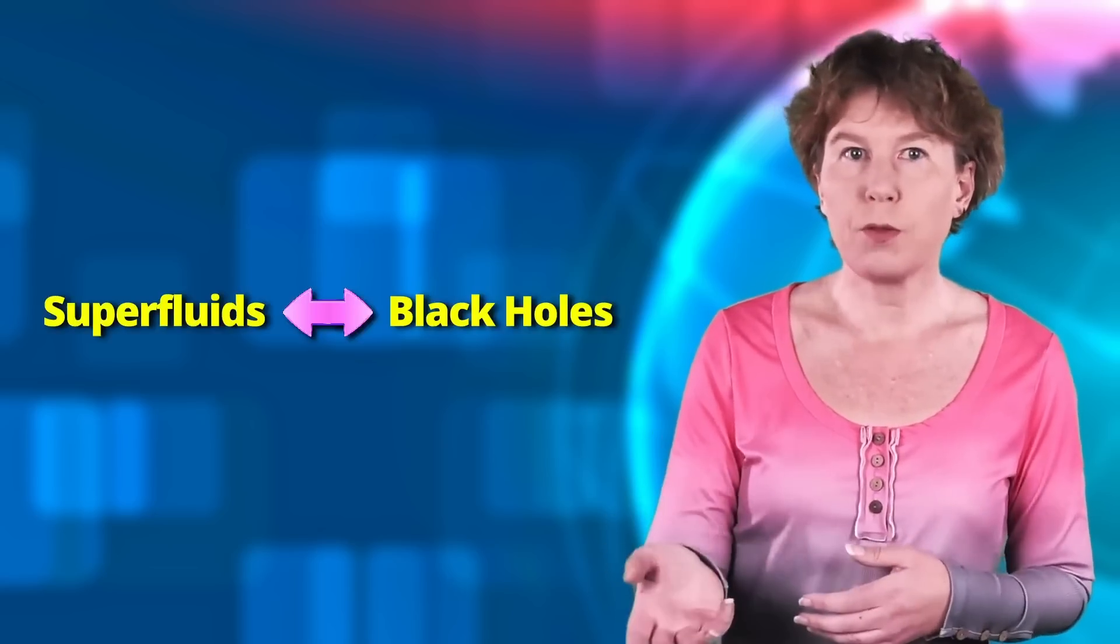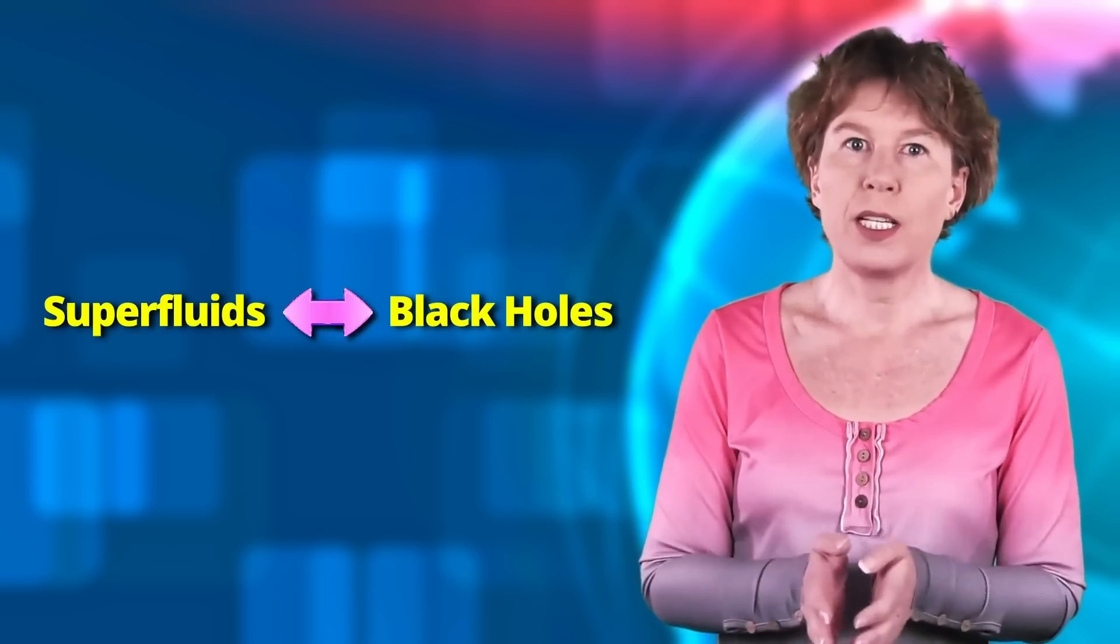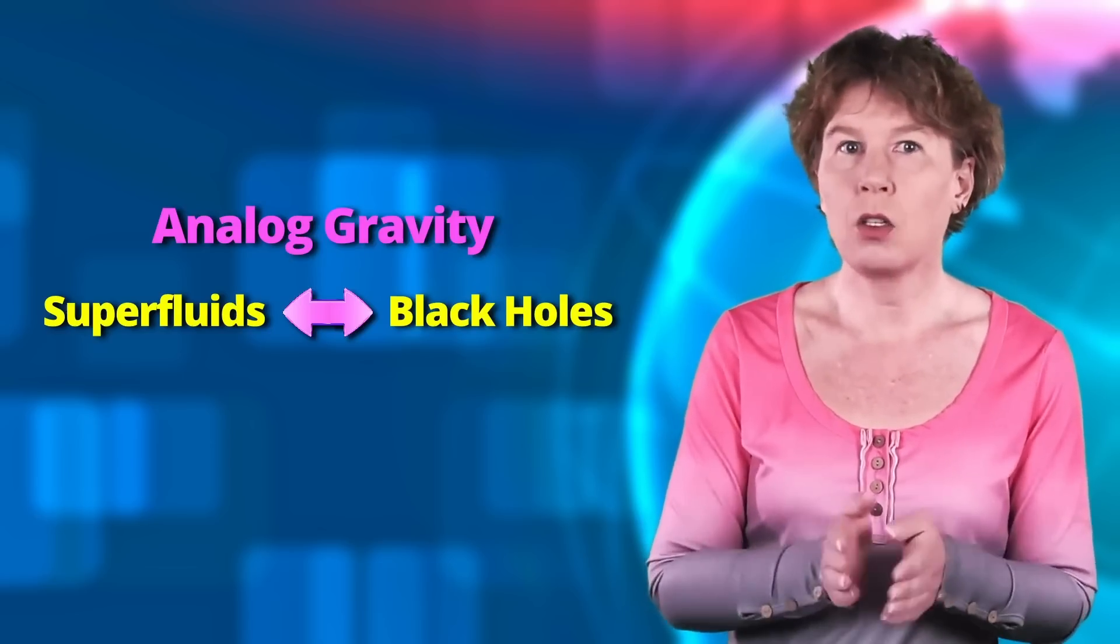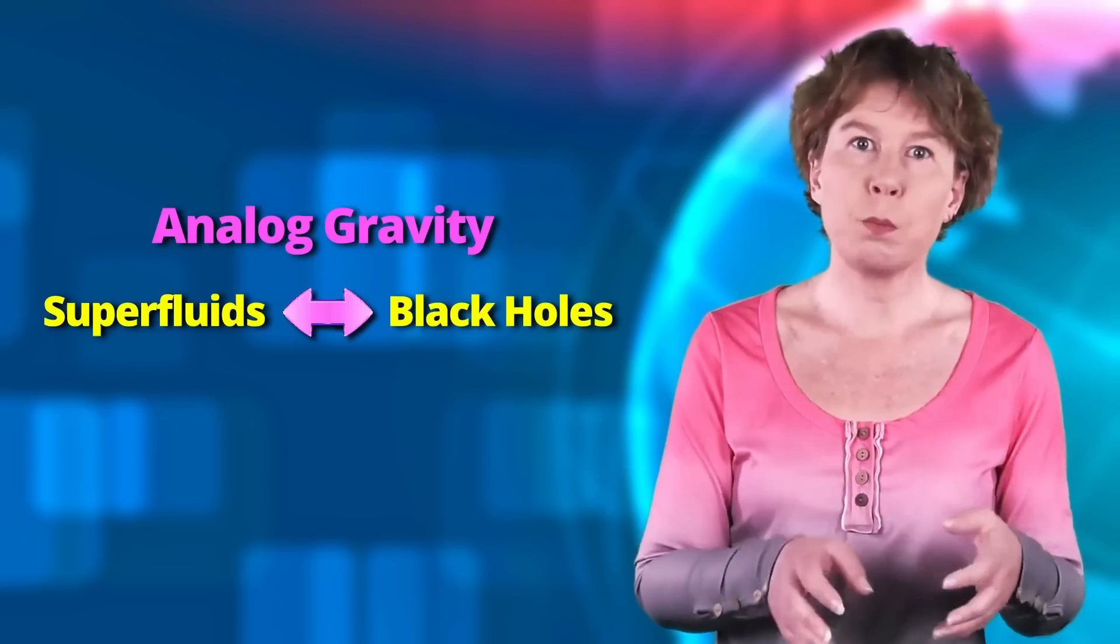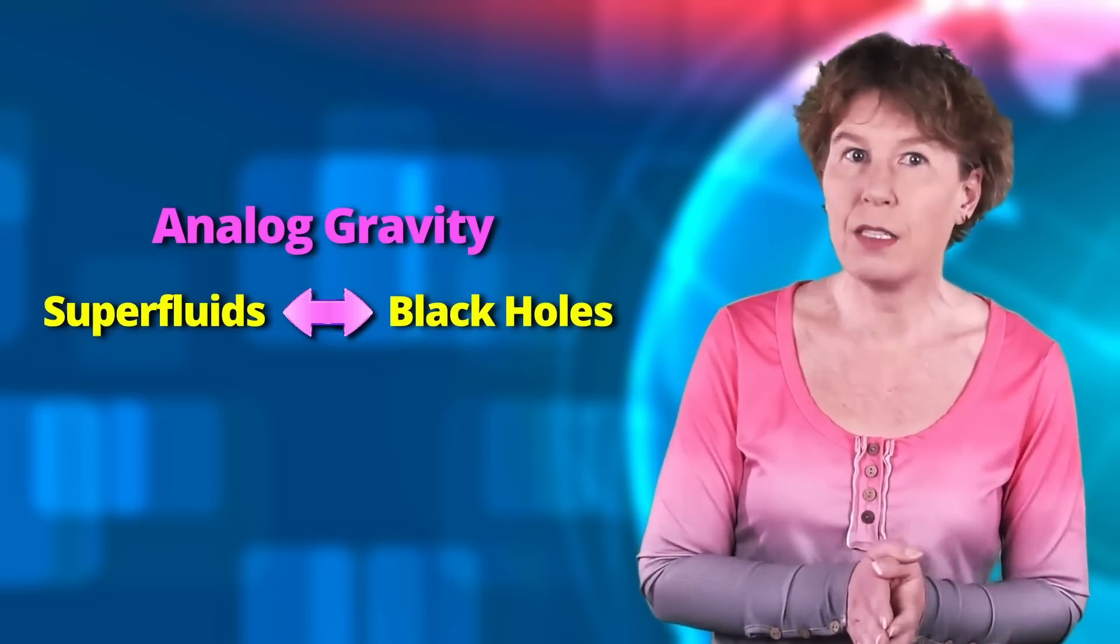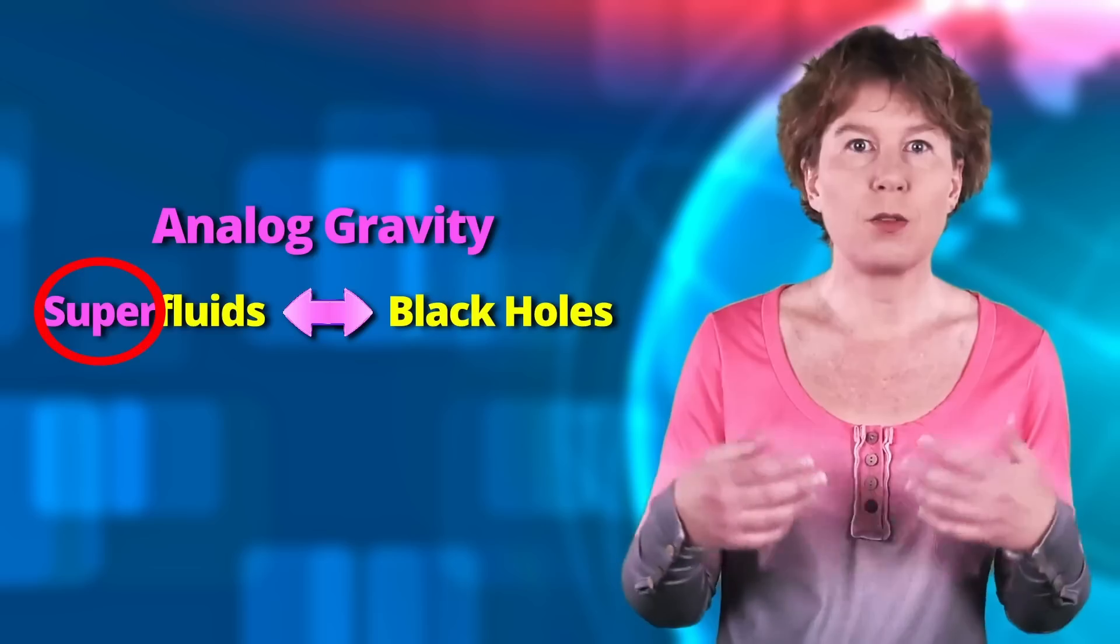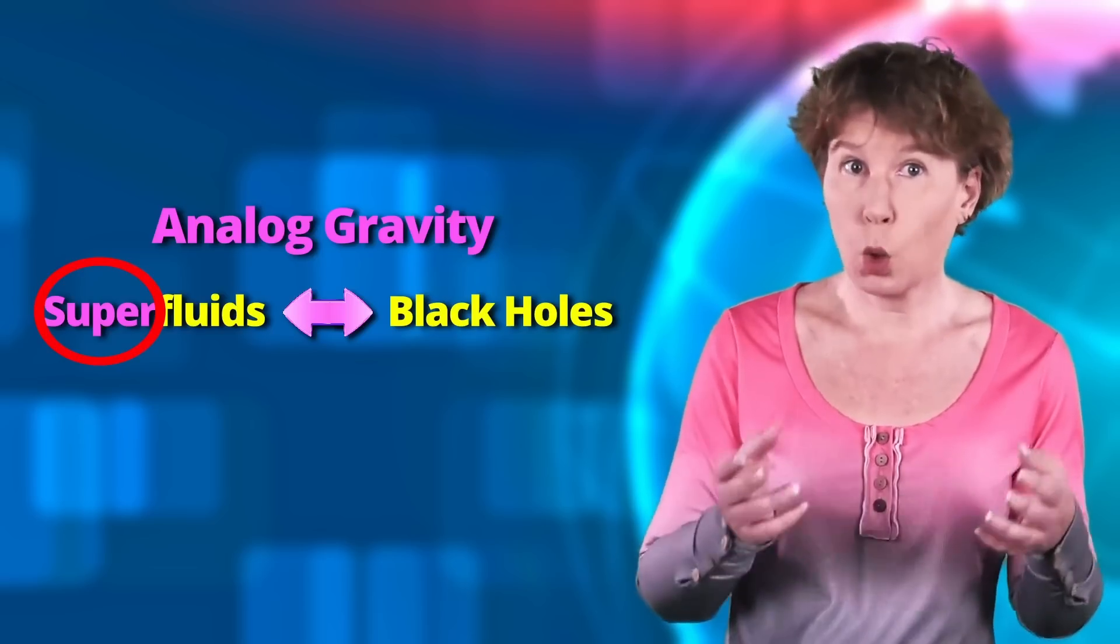This analogy between superfluids and black holes isn't just words. The equations are actually the same. This relation is known as analog gravity. The equations are the same, provided the medium has a suitable behavior. For one, it needs to be a superfluid, and it also needs to flow in a specific way. That's why they need the quantum tornado.